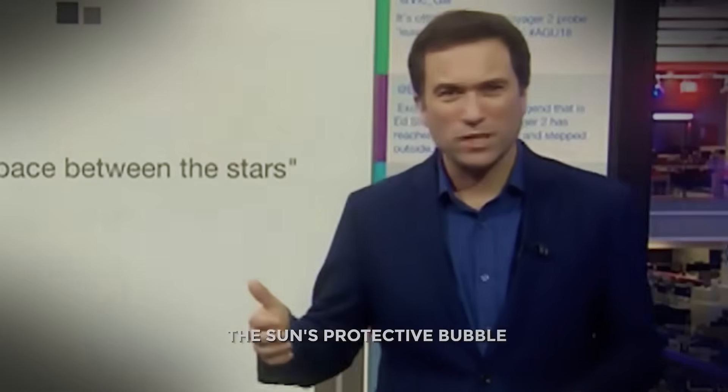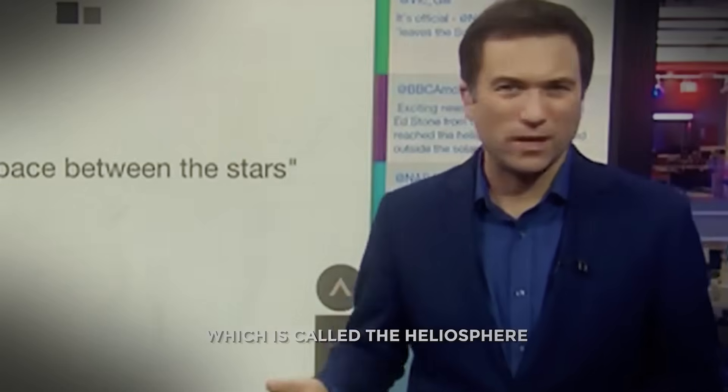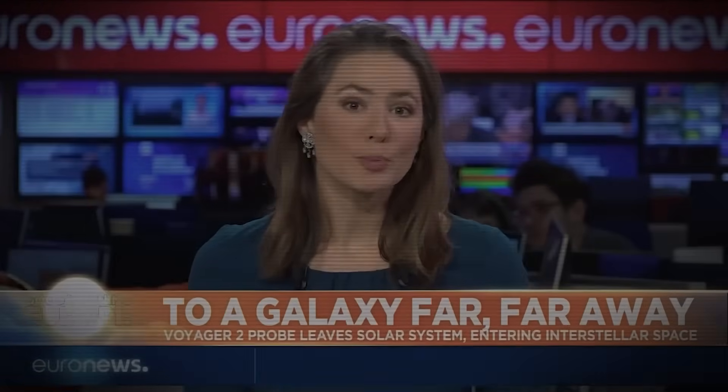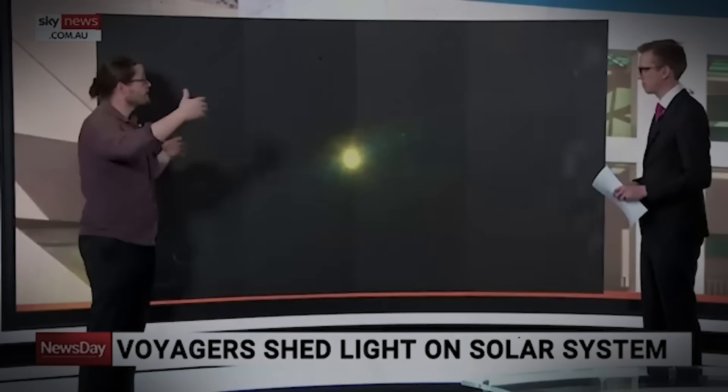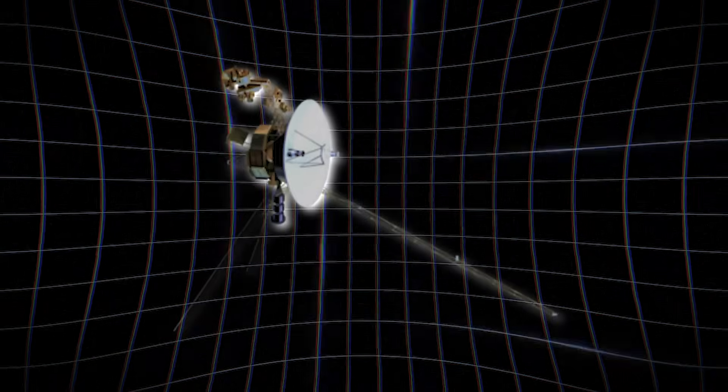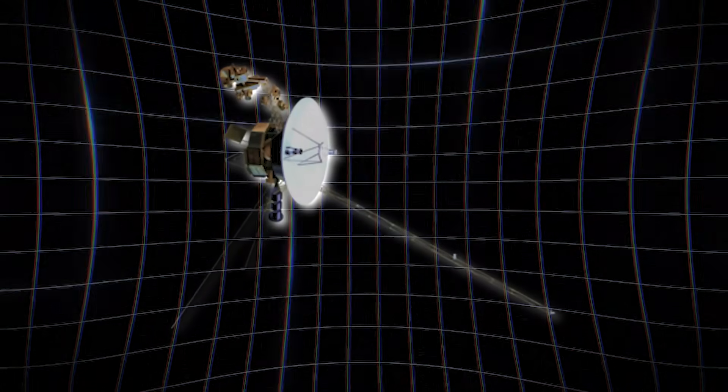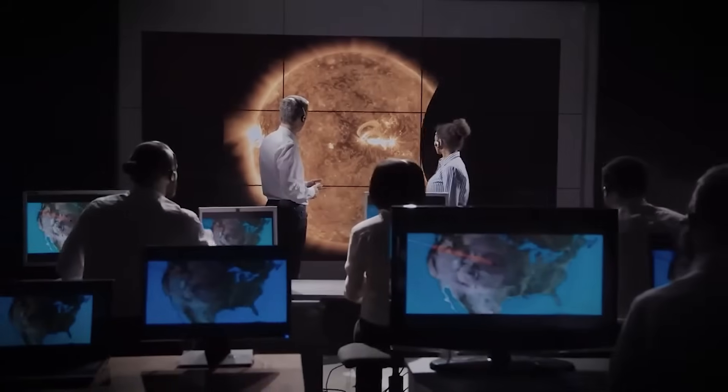Voyager 2 probed the sun's protective bubble, called the heliosphere. The Voyager 2 spacecraft has finally bid farewell to our solar system. Voyager 1 and 2 were built in the 70s to explore the gas giants at the outer edges of the solar system. Voyager 2 just detected something deep in space, and scientists are freaking out.